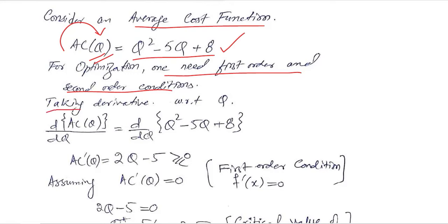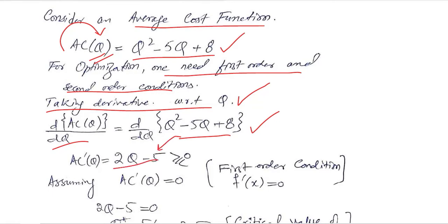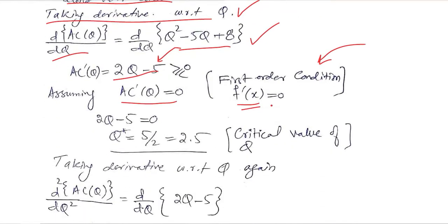We start with the first order condition, which requires the first order derivative with respect to q. Taking the first order derivative, we get the answer, and we put it equal to zero. The first order condition gives us 2q minus 5 equals zero.